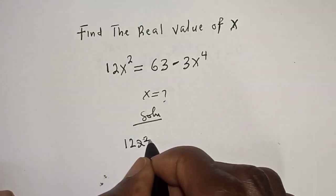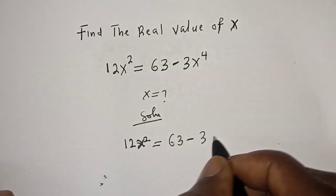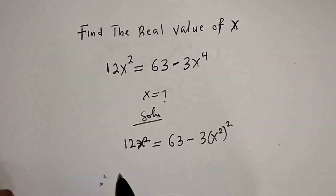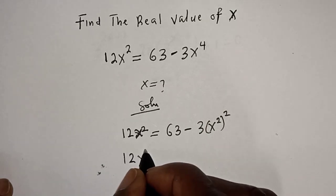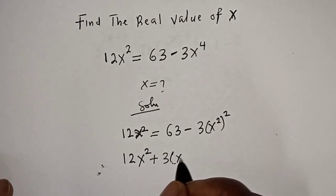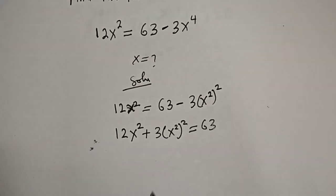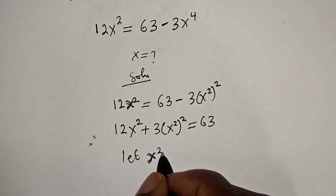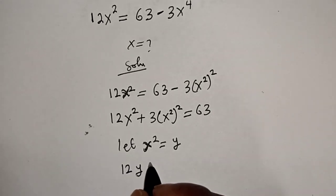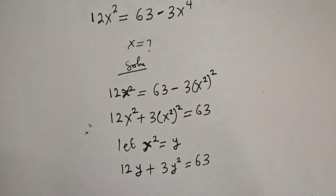Solution: we have 12s² is equal to 63 minus 3(s²)². So this is 12s², then if we bring this term over, we get plus 3(s²)² is equal to 63. Let s² be equal to y, so we have 12y plus 3y² is equal to 63.